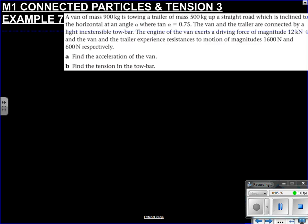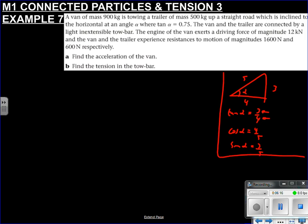So this time we've got a van of mass 900kg towing a trailer of 500kg up a straight road inclined to the horizontal at angle alpha, where tan alpha is 0.75. We talked about this before. Tan alpha is 3/4. Draw a quick triangle to the side, completely to the side. Opposite over adjacent. 5. We now know that cos alpha exactly is 4/5, and we know sin alpha is opposite over hypotenuse, so 3 over 5.